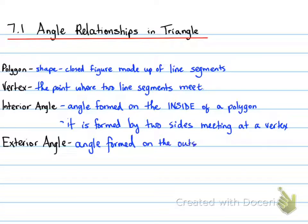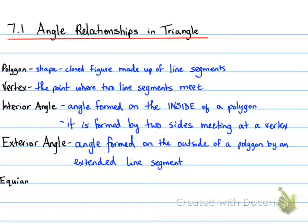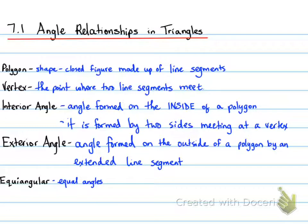An exterior angle is the angle formed on the outside of a polygon by an extended line segment from one of the sides. Another word we need to know is equiangular. Equiangular implies equal angles all along the polygon. You've seen equilateral triangles — they imply equal angles and equal sides — but equiangular implies only the angles.